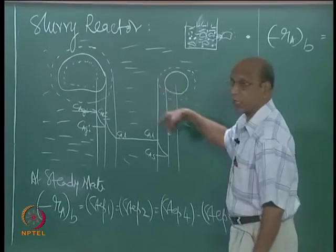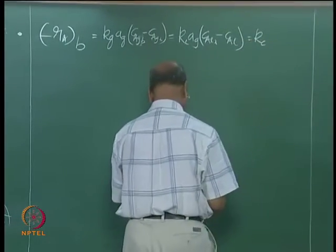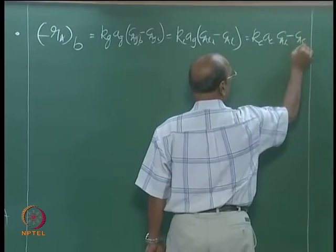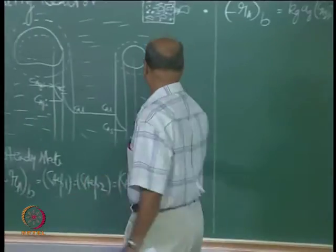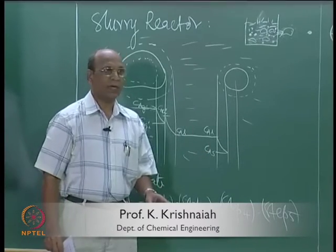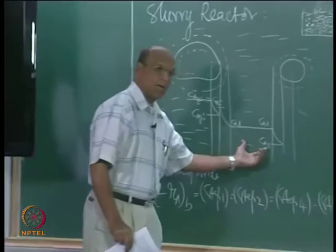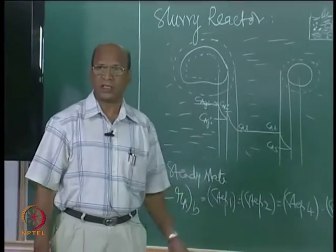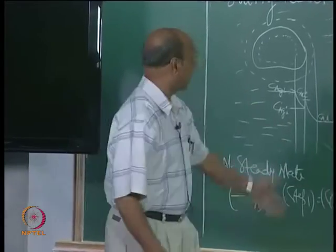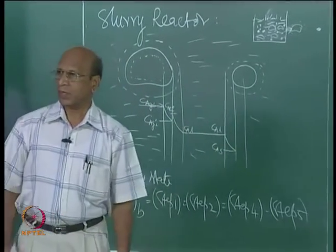Through the film around the catalyst particle, we call it K_c times A_c, then we have (C_AL minus C_AS). This concentration gradient - that is why this imagination is very, very important in all heterogeneous systems. That imagination gives a clear picture of what equations to write, and to get this level of imagining you need a lot of information in your mind about the process.